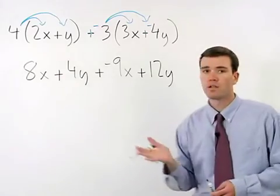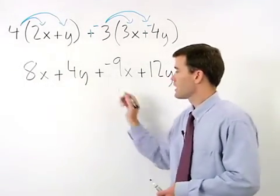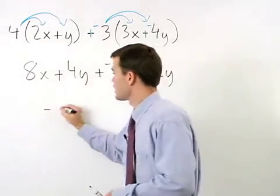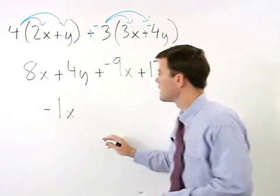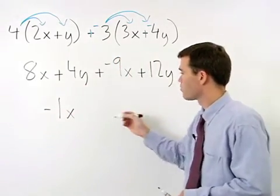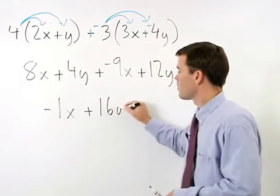Now we can combine like terms. 8x plus negative 9x is negative 1x and 4y plus 12y is plus 16y.